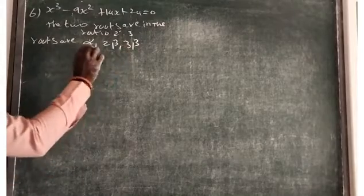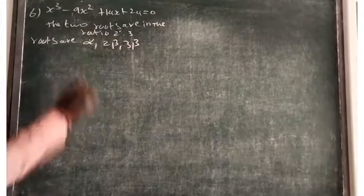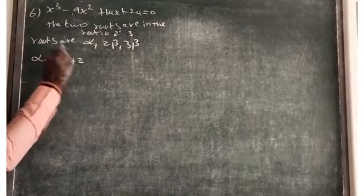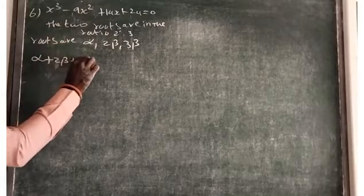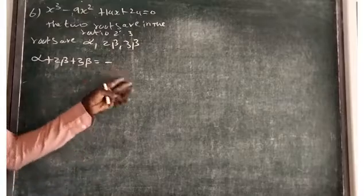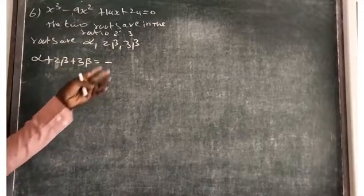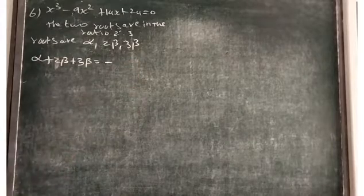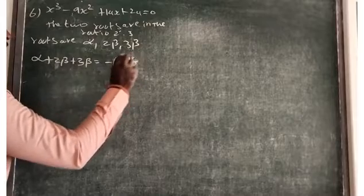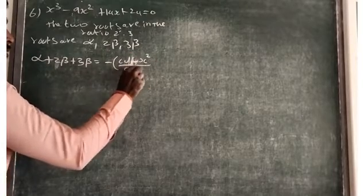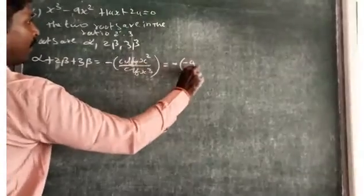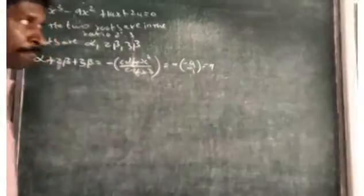With the help of the three roots, we need to find their values. The sum of all three roots — alpha, 2 beta, and 3 beta — equals minus of the coefficient of x squared by the coefficient of x cubed, that is minus b by a. So, minus of minus 9 by 1 becomes plus 9.